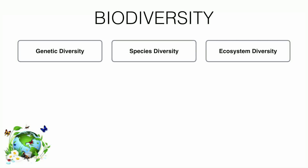Let's talk about the classification of biodiversity. Biodiversity is divided into three parts: one is genetic diversity, second is species diversity, and third is ecosystem diversity.